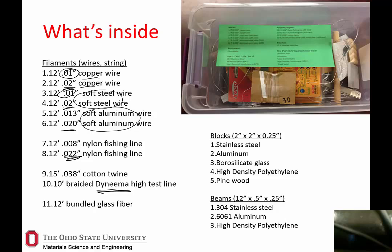We also have bundled glass fiber — also sort of a braid — and some cotton twine. So we've got these different materials with different properties that we can compare very nicely. For example, we can ask very precisely: which material has higher resistivity — steel, aluminum, or copper? With the same diameters, we can test them in tension, run resistance through them, or weigh them to compare density.